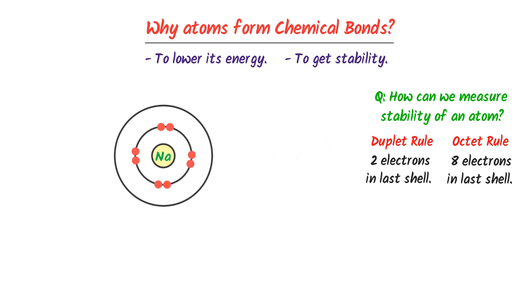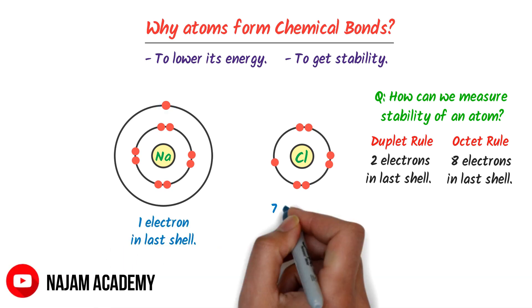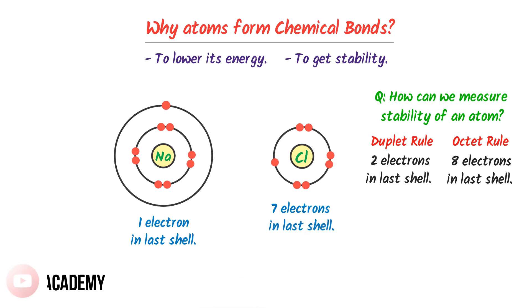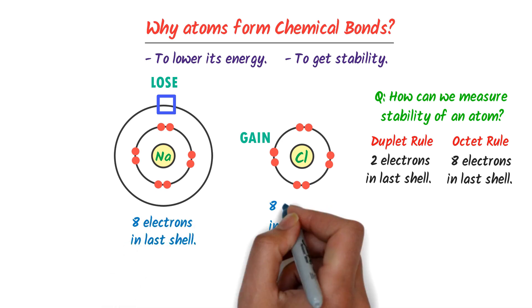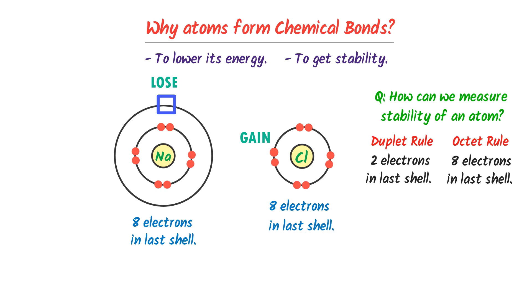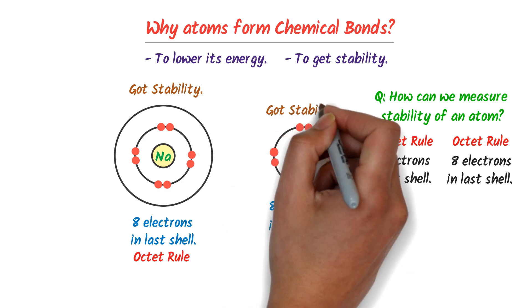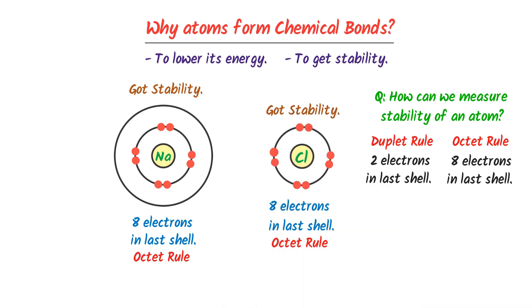For example, consider sodium and chlorine. In the last shell of the sodium atom, there is only one electron, while in the last shell of the chlorine atom, there are seven electrons. Sodium will lose this one electron and chlorine will gain it. So there are eight electrons in sodium's outer shell and eight in chlorine's, completing the octet rule for both. Thus, by losing and gaining electrons, they both form a chemical bond.